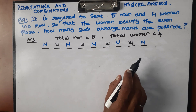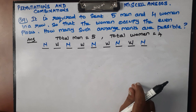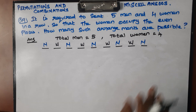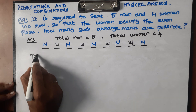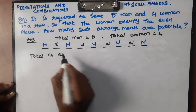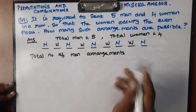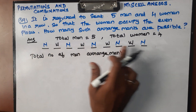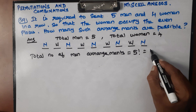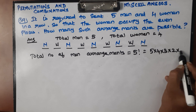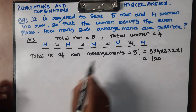We use arrangements, permutations, selection, combination, and the multiplication principle. First, the total number of arrangements. Total number of men arrangements — how many men are there? Five. So 5 factorial = 5 × 4 × 3 × 2 × 1. That gives us: 5 fours are 20, 20 threes are 60, 60 twos are 120.